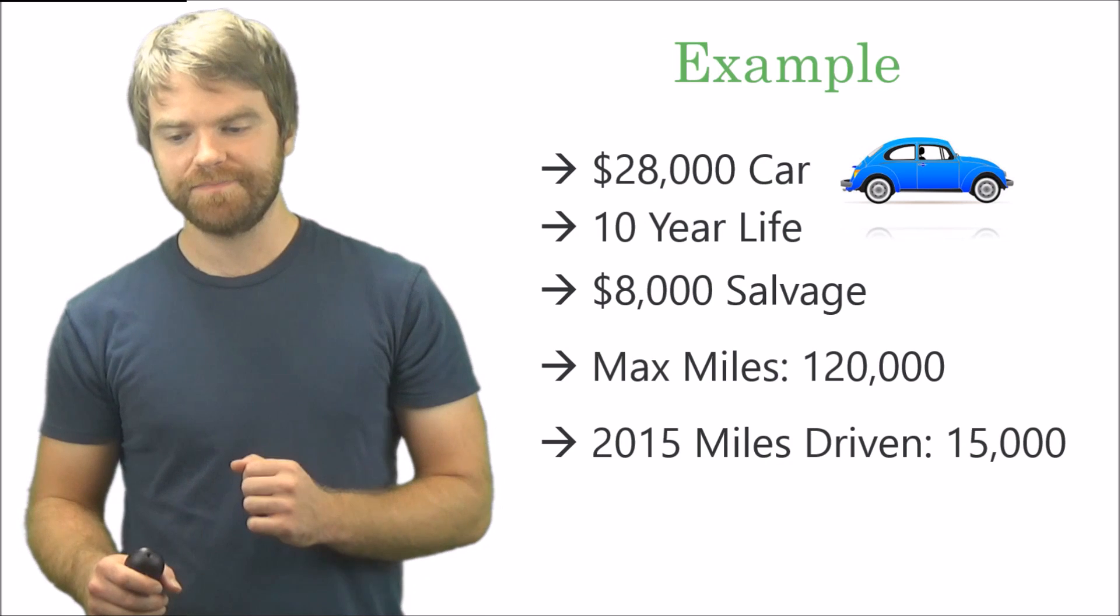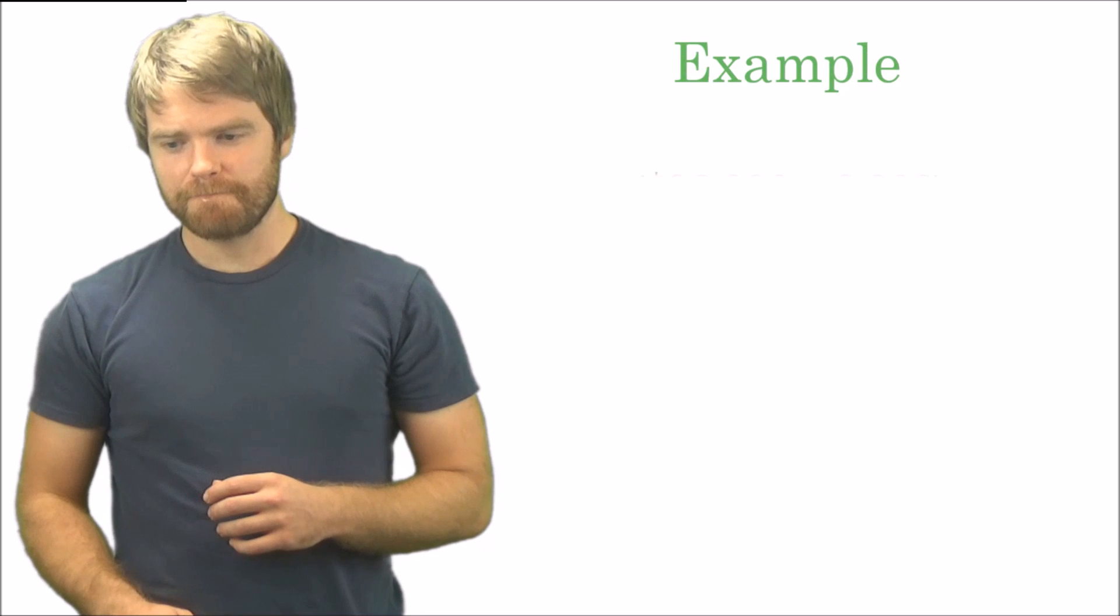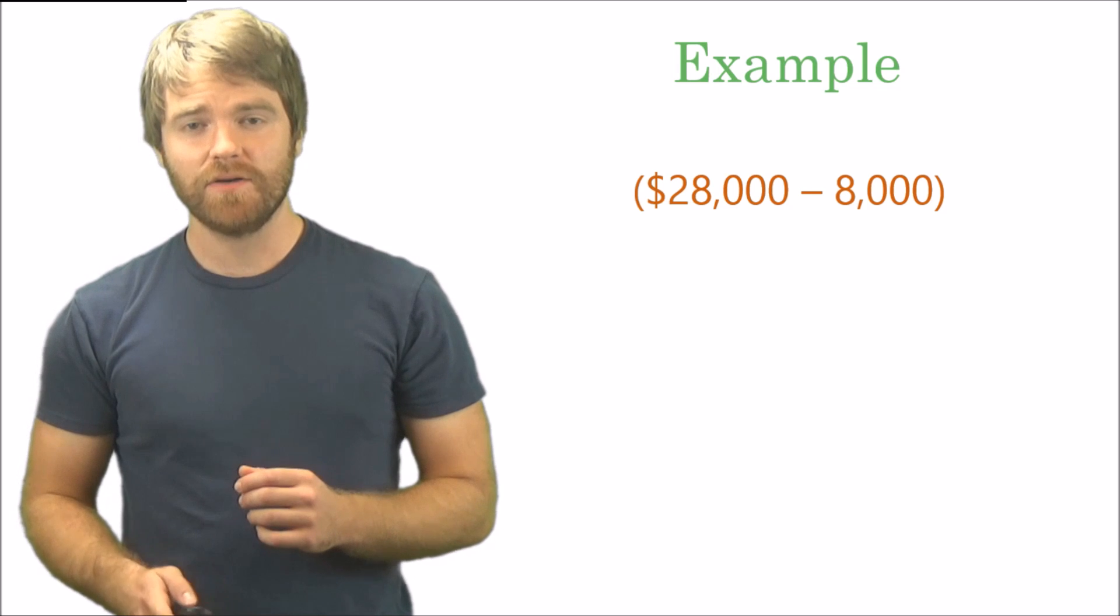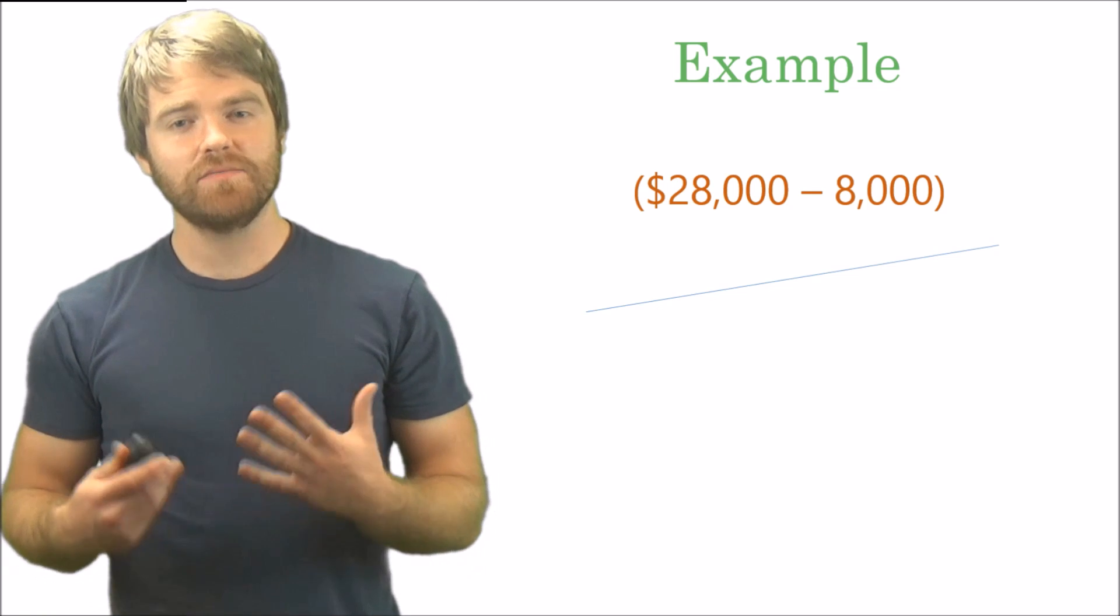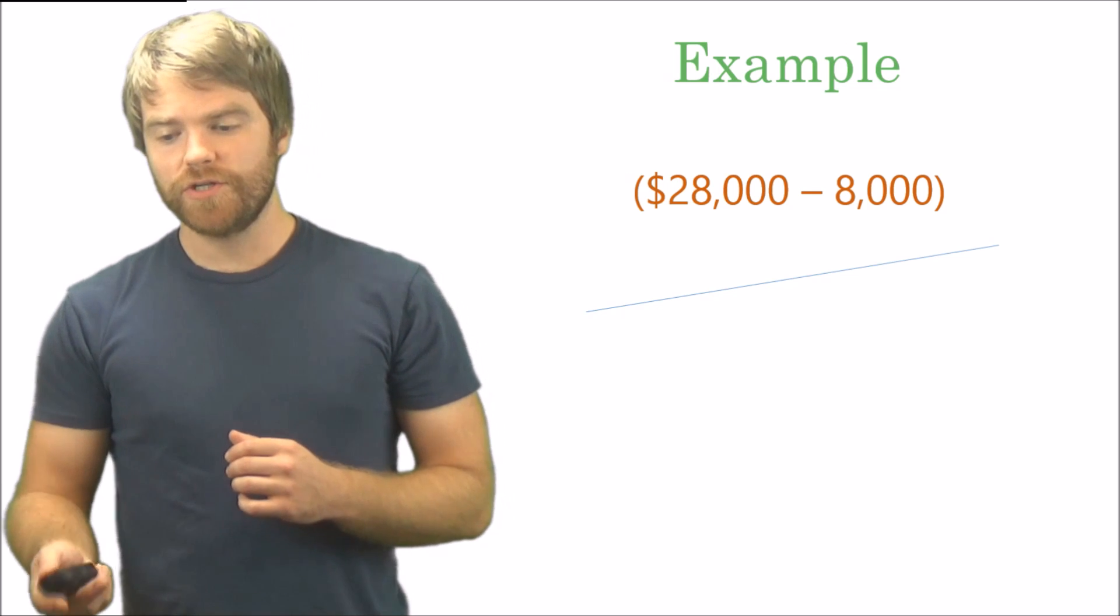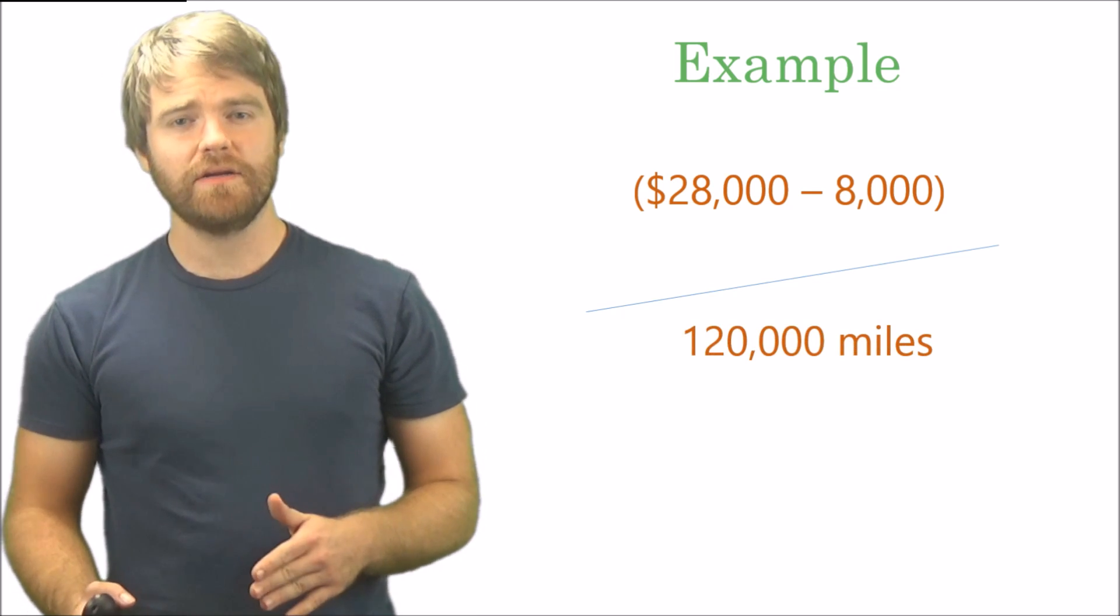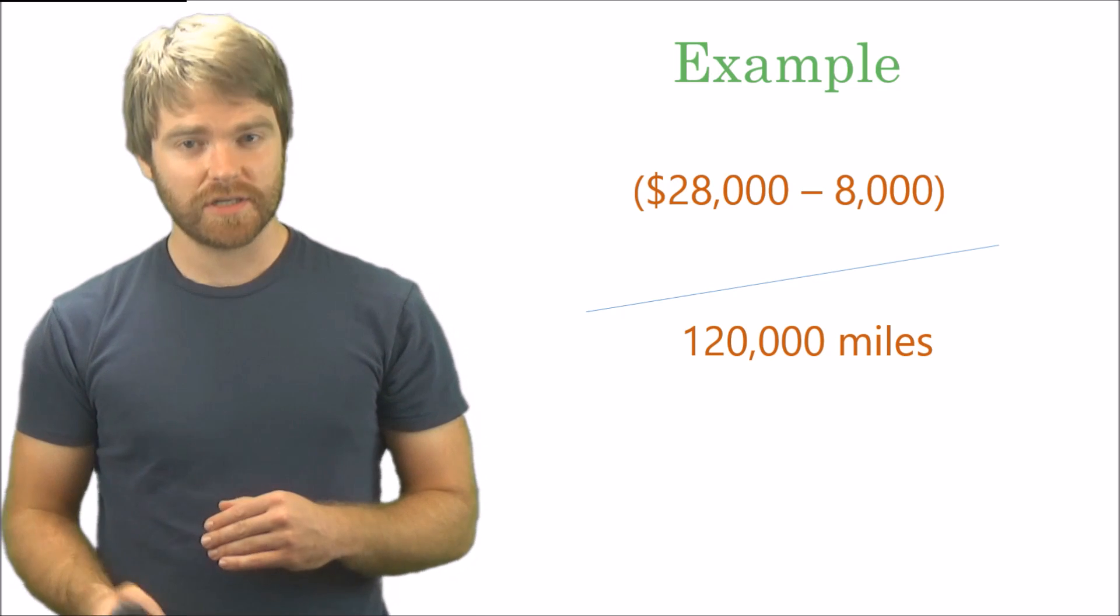Now I'll show you how to calculate the depreciation expense. We're going to use that same data and fill out that formula. Let's take a look. $28,000 for the cost of the asset, deduct the salvage value of $8,000, and divide it by the activity consumption, or you can say the maximum allowed miles for that car, which is 120,000 miles. What we're getting here is the cost per mile, or you can say the depreciation cost per mile.